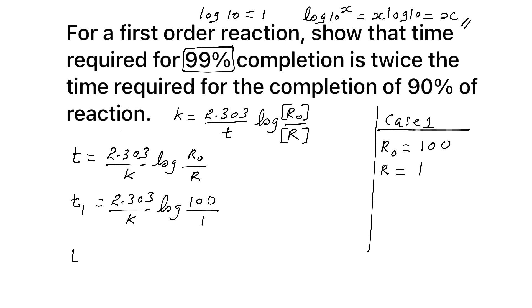Now case 2, we can say T2. For case 2, again it is in percentage, so you can say initial concentration is 100. Now what is final or present concentration? 90% is completed. So what is left? 10. 100 minus 90 is 10. Now write the equation for time for the second case. 2.303 by K log R0 is 100, present concentration is 10.